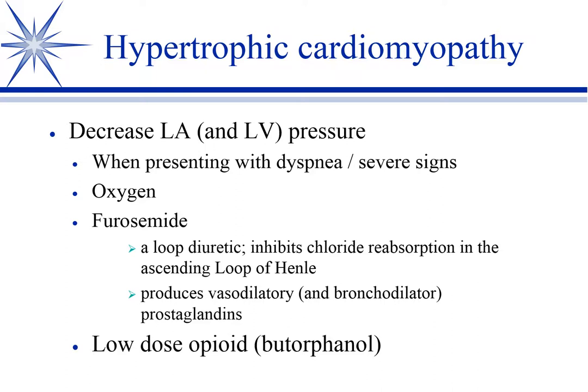In addition to supplying more oxygen to the tissue, oxygen decreases your hydrostatic pressure in your pulmonary artery, so you get less driving pressure for pulmonary edema and pleural effusions. The second thing you do is add furosemide as a loop diuretic - that's going to inhibit chloride reabsorption in the loop of Henle.